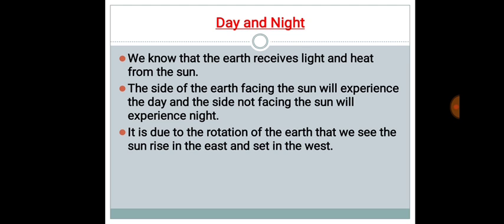Now, day and night. In this point, we will see how we get day and night. We know that the earth receives light and heat from the sun. The side of the earth facing the sun will experience the day and the side not facing the sun will experience night. It is due to the rotation of the earth that we see the sun rise in the east and set in the west.